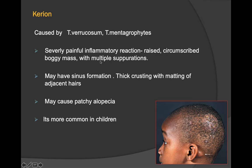Kerion lesions are caused by T. verrucosum and T. mentagrophytes. Severely painful inflammatory lesions are seen with raised, circumscribed, boggy mass with multiple suppurations — pus-forming lesions with possible sinus formation. There is thick crusting with matting of adjacent hairs and patchy alopecia. It is more common in children.